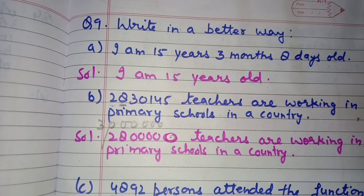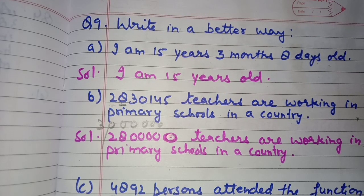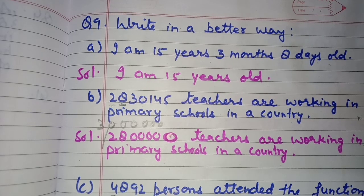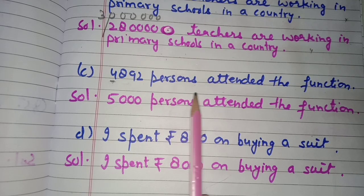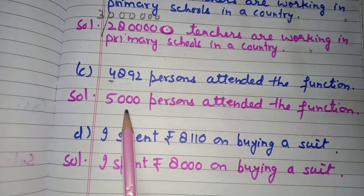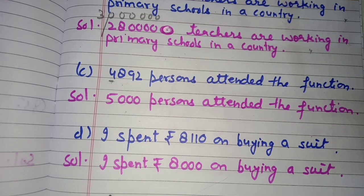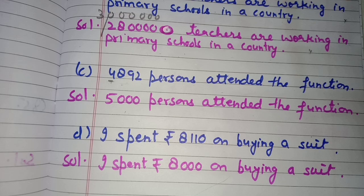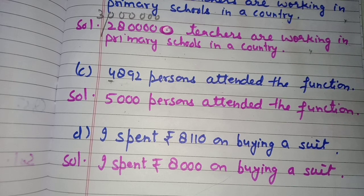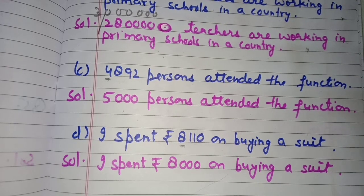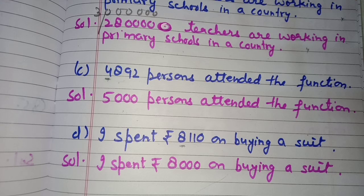'4,892 persons attended the function' — the estimated figure would be '5,000 persons attended the function', rounding off to the nearest thousand. 'I spent rupees 8,110 on buying a suit' — when shopping, you give an estimated figure, so you would say 'I spent rupees 8,000 on buying a suit.' I hope you all have understood this exercise.